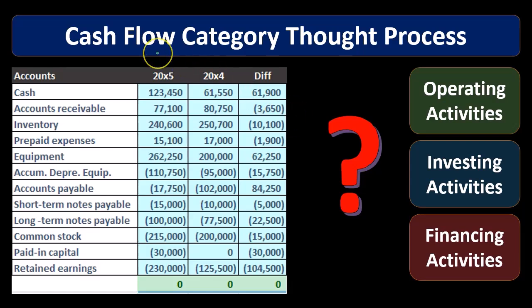The worksheet is basically a comparative balance sheet that we've reformatted from a balance sheet to a trial balance type format — a debit and credit type format. You can see that we have our balance sheet accounts and we are in balance, with debits being positive and credits being negative, or debits minus credits equaling zero, indicating that the current period is in balance.